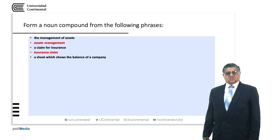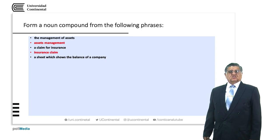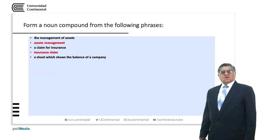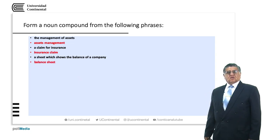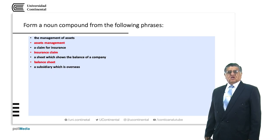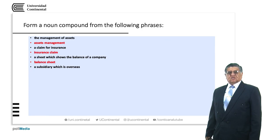Let's move a bit faster because there are a lot of examples to clarify what we are doing. A sheet which shows the balance of a company — this is a piece of paper that will summarize the balance of a company. So we have 'a balance sheet'. In plural, 'balance sheets'. Remember, we pluralize the second word or the final word. A subsidiary which is overseas — it's an office that is not in the country the principal office is. So we have 'an overseas subsidiary'.